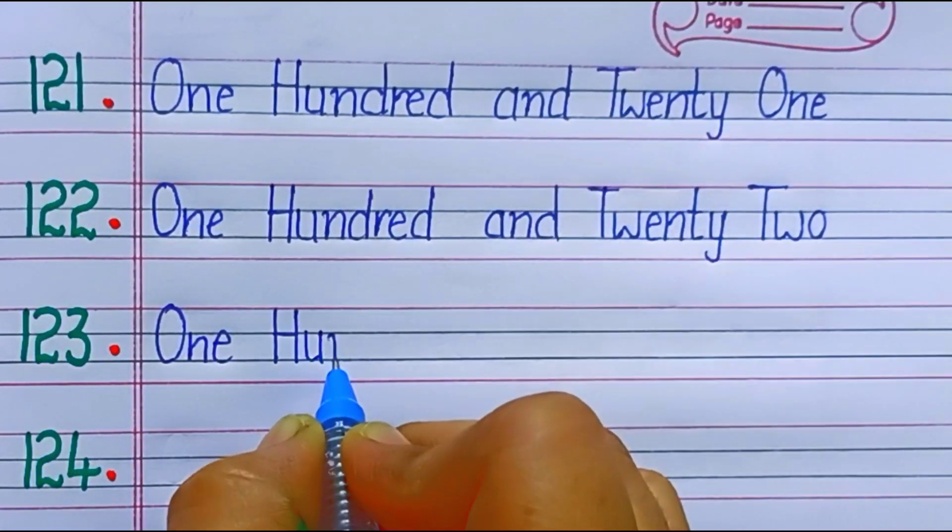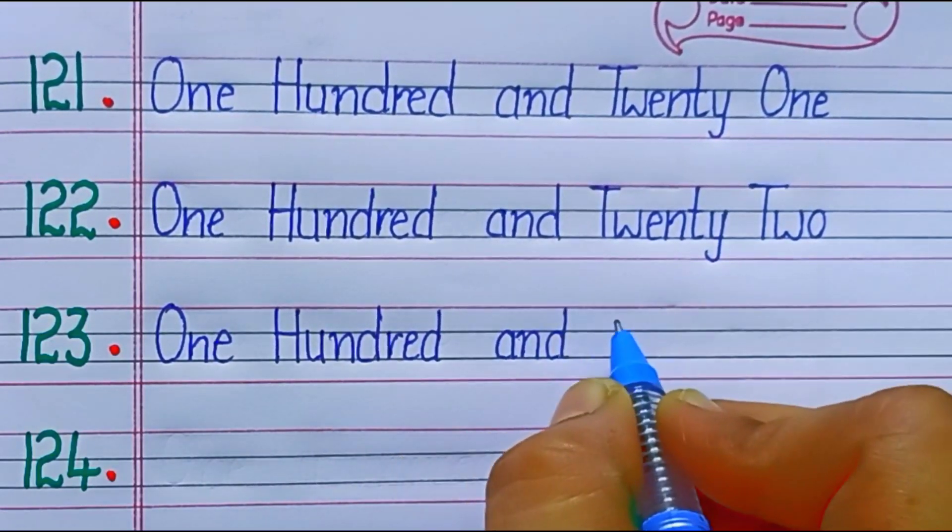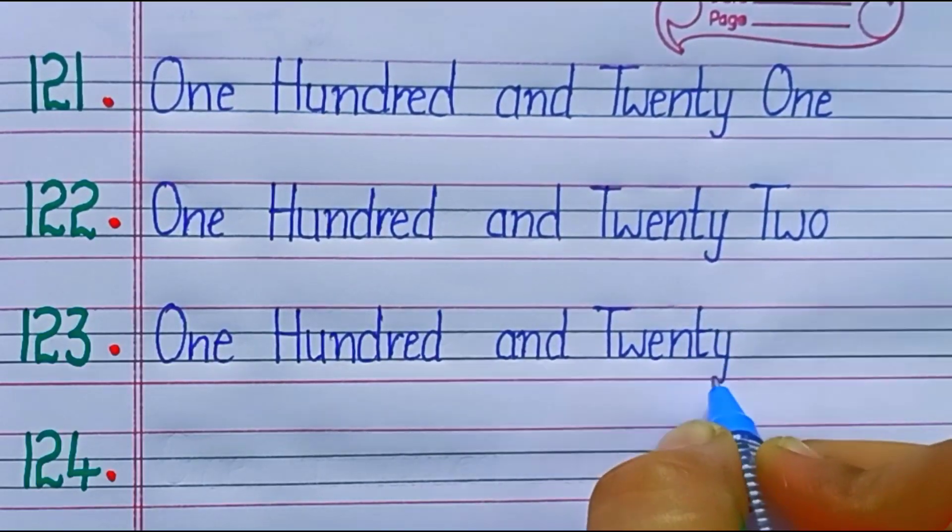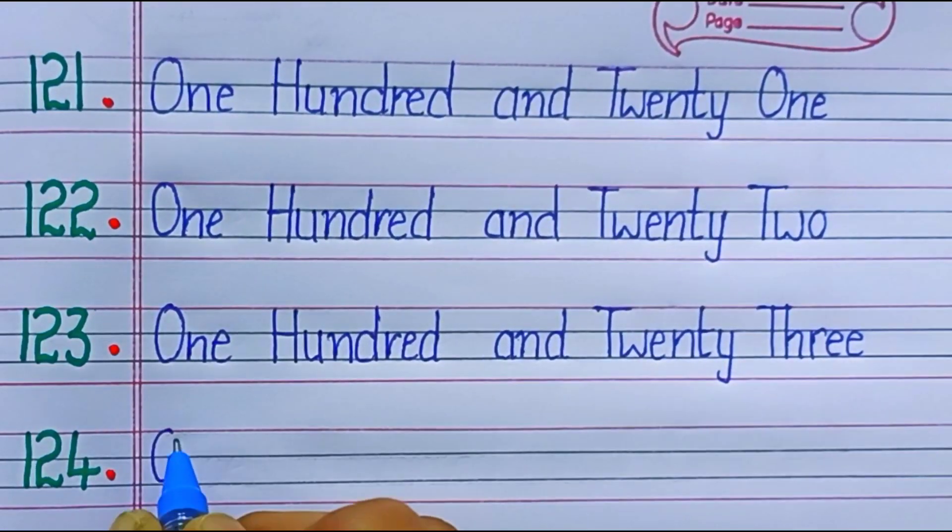123. One hundred twenty-three. T-W-E-N-T-Y, twenty. T-H-R-E-E, three.